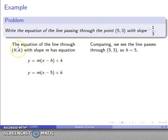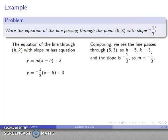k, that's the y coordinate of the point. That's going to be 3. So I'll substitute that in. And then m, that's my slope. m is the slope. It's negative 1/3. I'll substitute that in. And there's my equation of a line.